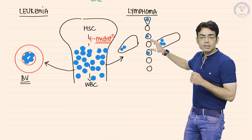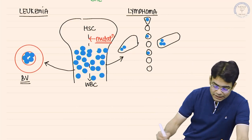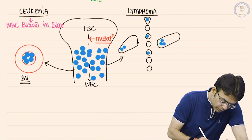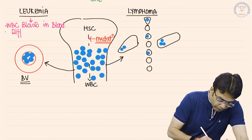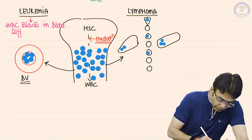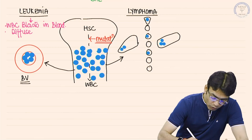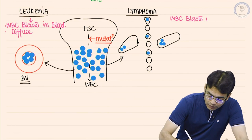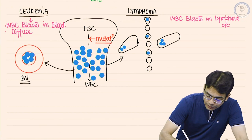So to summarize: lymphomas are focal deposits of WBC blasts, and leukemias are diffuse. Leukemia means WBC blasts in blood and it is diffuse. Lymphoma means WBC blasts in lymphoid organs and it is a focal deposit. These are the basic differences between leukemia and lymphoma.